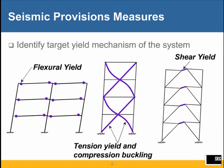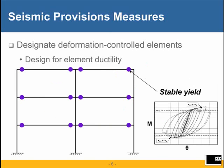For example, there are three examples here: flexural yielding of the plastic hinge region in a moment frame; tension yield or compression buckling in a concentrically braced frame; or the shear yielding of a link in an eccentrically braced frame. Step two is to designate deformation-controlled elements and design those elements for ductility. Several types of provisions ensure ductility, such as B/T ratios to limit compactness of a member, or bracing for stability.